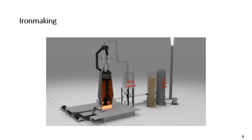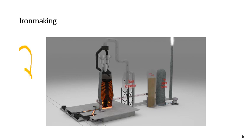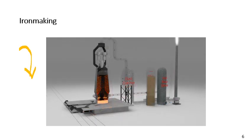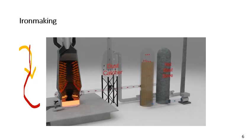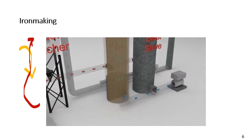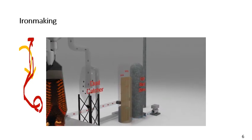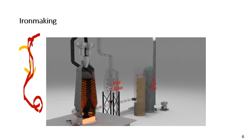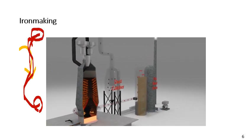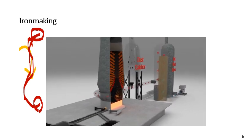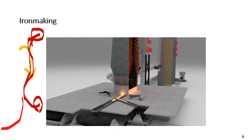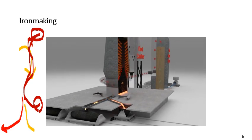Here we have an animation from the Association for Iron and Steel Technology showing where the solid material works its way down and the hot gases work their way up, starting with the hot blast stove going through the blast furnace, then to a dust collector for cleaning. Out of the blast furnace the products are the steel we want and the slag that we don't want.